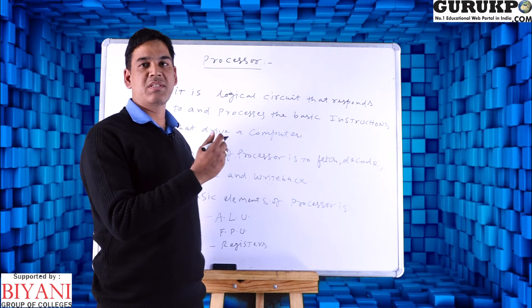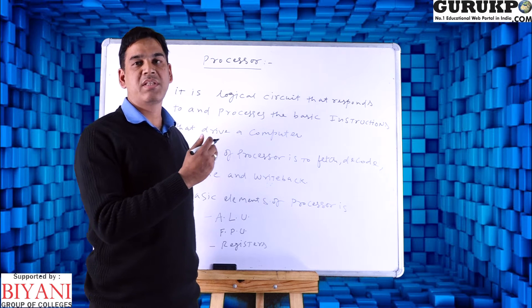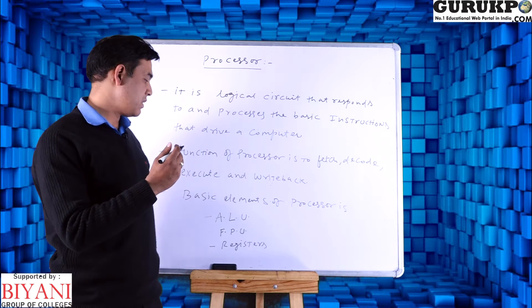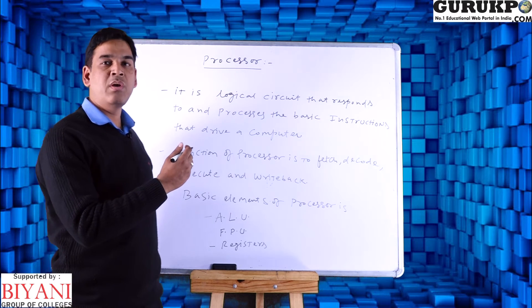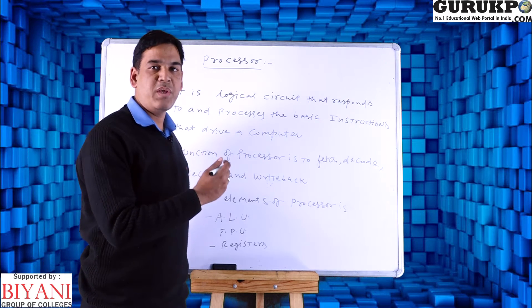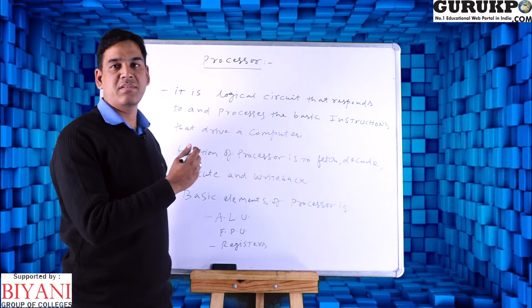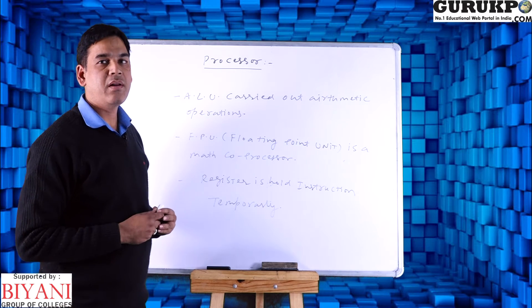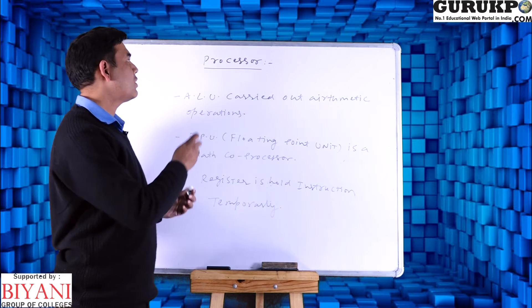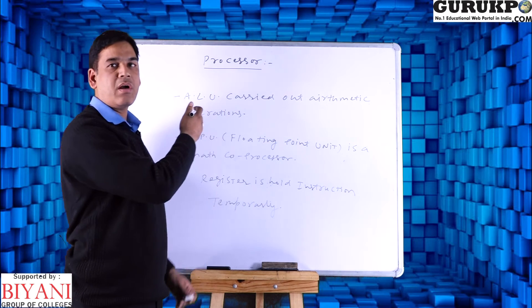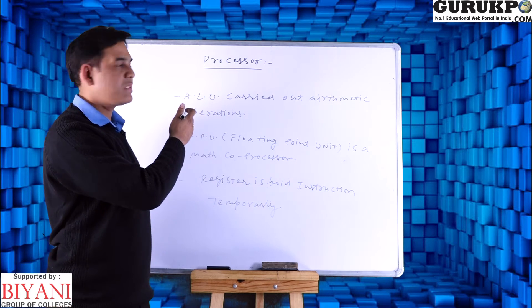The elements of a processor — we have three types of elements: ALU, FPU, and registers. Let us discuss about the particular components of a processor.